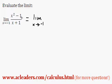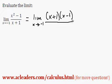So right here, the top, x squared minus 1, simplifies into x plus 1 times x minus 1. Hopefully you guys remember the difference of squares.